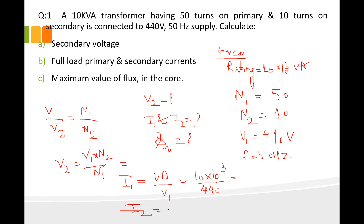The value of I2 is: I2 = VA rating / V2. The VA is 10 × 10³, and we use the value of V2 just calculated. Putting in the values of VA and V2, we get the value of I2.